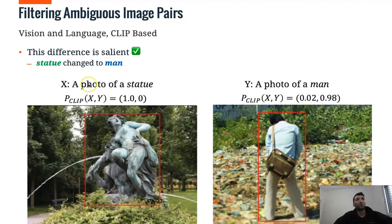On the other hand, this difference is salient. This is a pair that we keep for our data set. It concretely shows a statue changed to man.